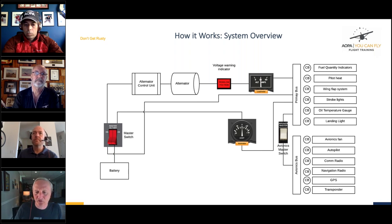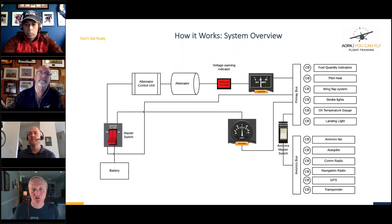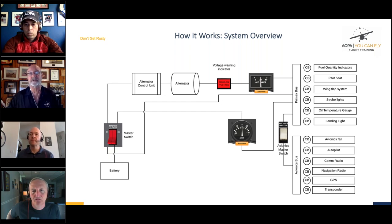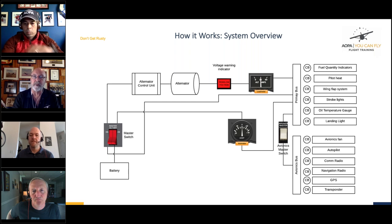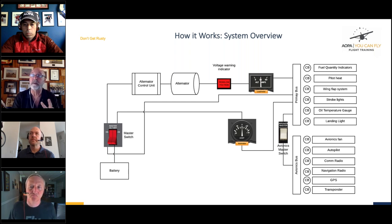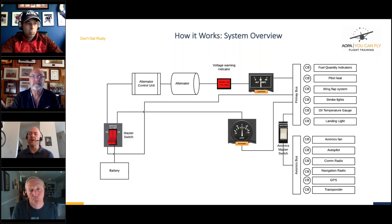Why do we have separate buses? Keith asks about aircraft with primary, essential, and multiple buses. Jamie: 'You can lose one bus and still have a backup. In most modern airplanes built since the seventies, you can run off the main bus — powered by the alternator — or if you have a failure you can turn that off and run off the battery bus as a backup source of power. So you have a little bit of redundancy built in.'